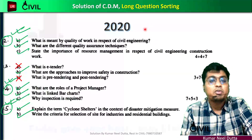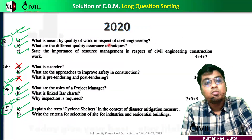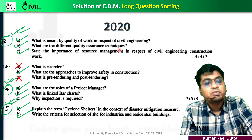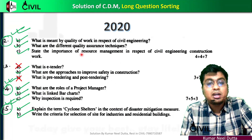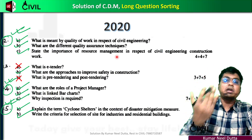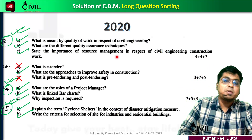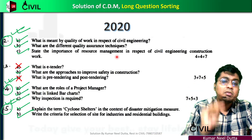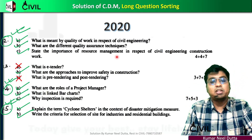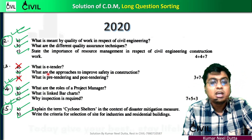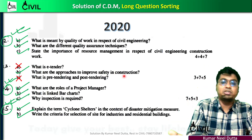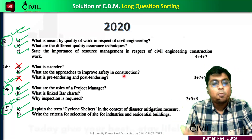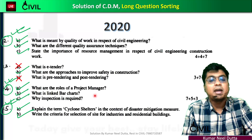In 2000, we will say quality work, quality assurance, resource management, quality assurance, quality of work. This is the approach to improve safety in construction. Safety, quality, safety — this is the role of project manager.